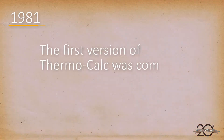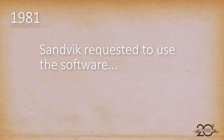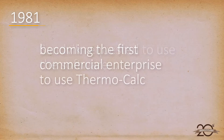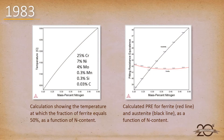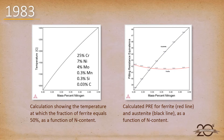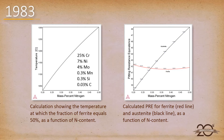In 1981, the first version of Thermo-Calc was completed, and global engineering group Sandvik requested to use the software, becoming the first commercial enterprise to access Thermo-Calc. Only two years later, in 1983, the Sandvik Group developed two new steels with the aid of the CALPHAD calculations in Thermo-Calc. These two steels went on to become established grades, confirming the value of Thermo-Calc and demonstrating the practical applications of CALPHAD-based software to materials engineering.